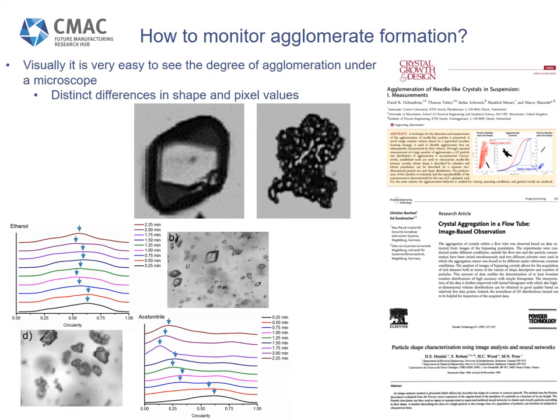Before we get too far into investigating these process parameters, we need a method for monitoring agglomeration. Ideally this method must be in situ, as filtering and drying samples could induce agglomeration. Now visually it's very easy for a person to distinguish between a single crystal and an agglomerate as they have distinctly different shapes. However, classifying thousands of particles manually would be very time consuming and wasteful. This is where particle vision tools come into their own, providing automated methods for the identification and description of particles. These can range from simple thresholding techniques to machine learning algorithms.